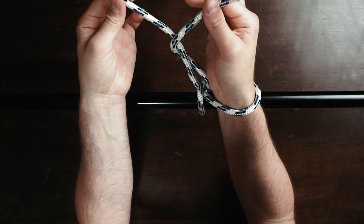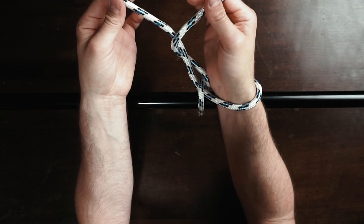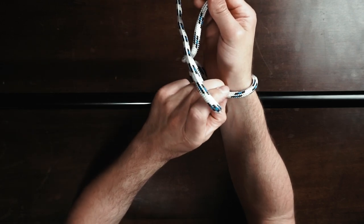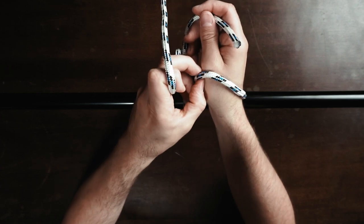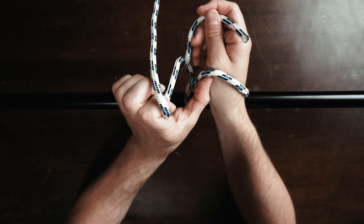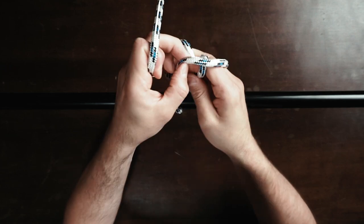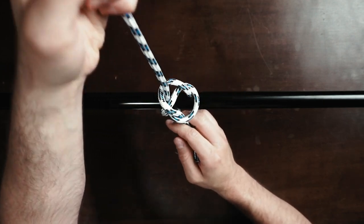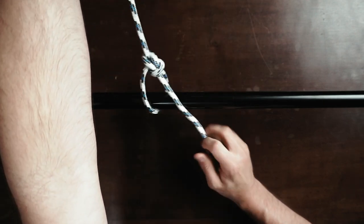And with some exercise you can really do it with one hand and really quickly. Now the working end is pulled through the loop that was around your wrist. Like this. If the loop does not slide off the wrist, help it a bit. Like this. And you're done.